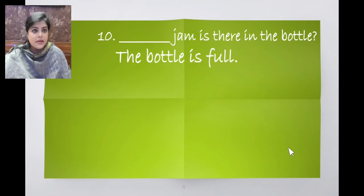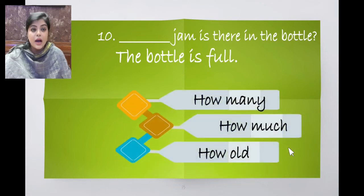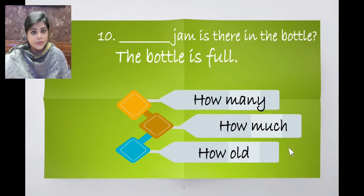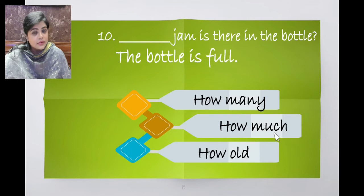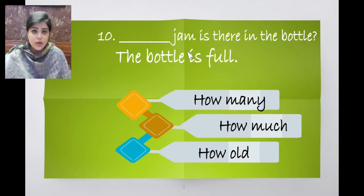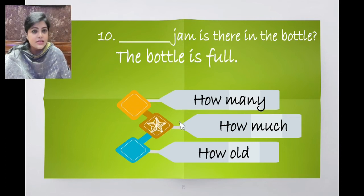Dash jam is there in the bottle. The bottle is full. Options: how many, how much, how old. Many is used for countable nouns, much is used for uncountable nouns, and old is used for age. Jam is uncountable, so the correct answer is how much. How much jam is there in the bottle? The bottle is full.